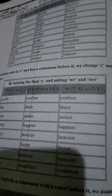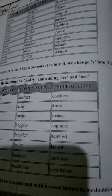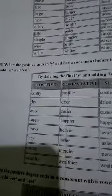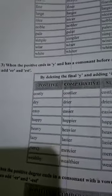We change Y into I, E, R for the comparative degree, and I, E, S, T for the superlative degree. So we change Y into IER and IEST.